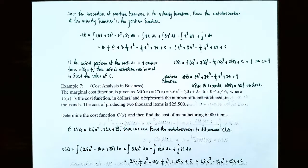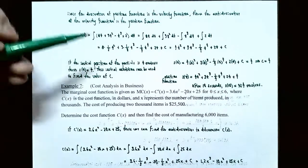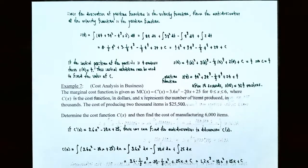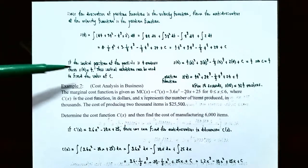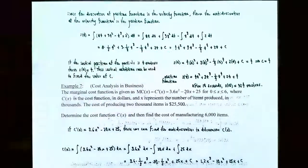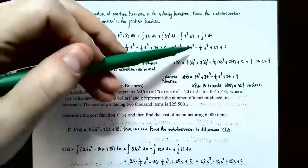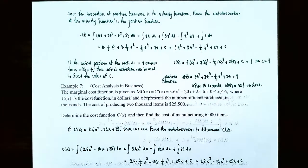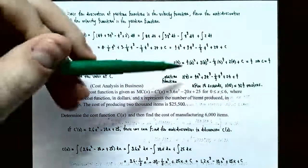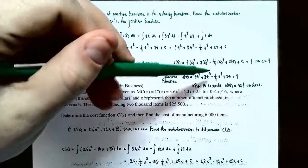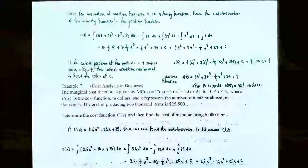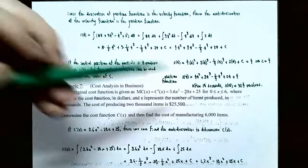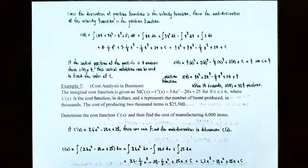Just like we did with the velocity function, we were given the initial position of the particle as 4 meters, so replacing all t's with 0 gives position = 4 meters. s(0) = 4(0²) + 3(0³) − one-fourth(0⁴) + 2(0) + C = 4, so the first four terms are all 0, giving C = 4. The particular position function is s(t) = 4t² + 3t³ − one-fourth t⁴ + 2t + 4. Replacing all t's with 10, the position of the particle after 10 seconds is 924 meters.